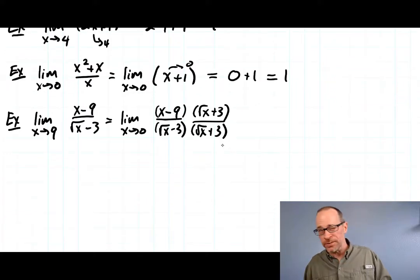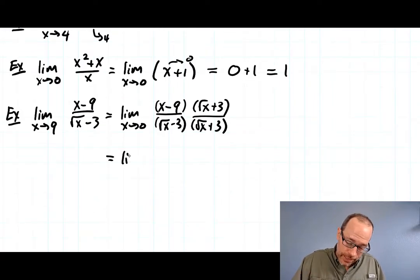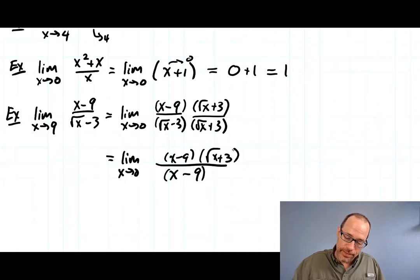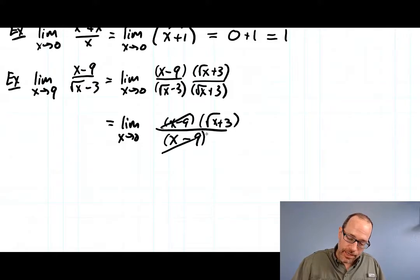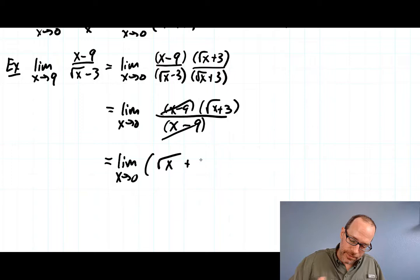You saw this trick with square roots before. The denominator: (a - b)(a + b) = a² - b². So I get (√x)² = x, minus 3² which is 9. On top, I won't multiply it out because terms will cancel. The x - 9 cancels, and I'm left with the limit as x goes to 9 of √x + 3.